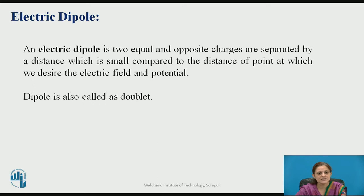Now define the electric dipole. An electric dipole is two equal and opposite charges separated by a distance which is small compared to the distance of the point at which we desire the value of electric field and the potential. This electric dipole is also called a doublet.